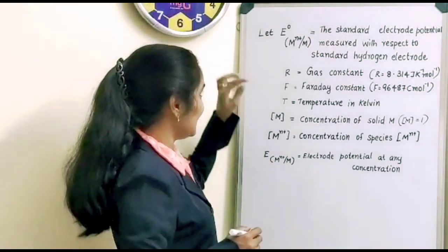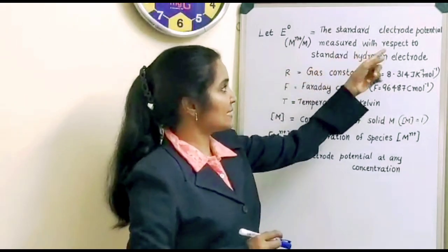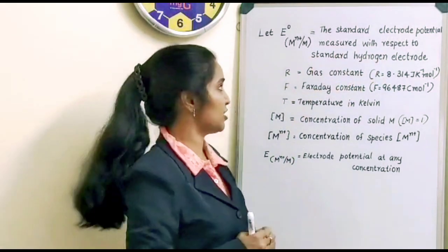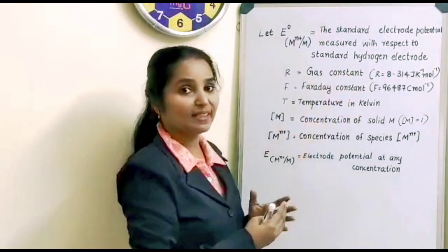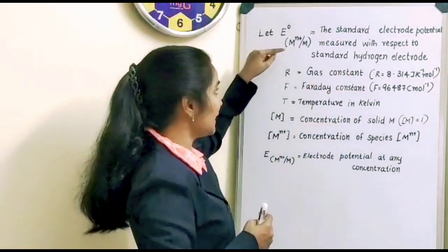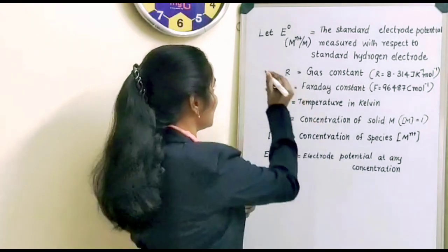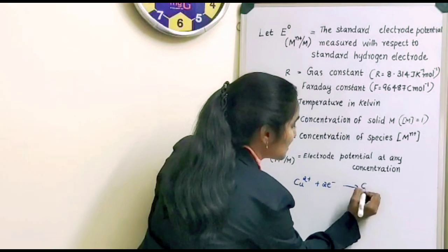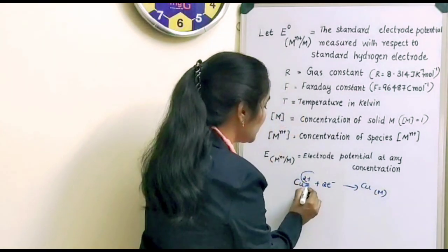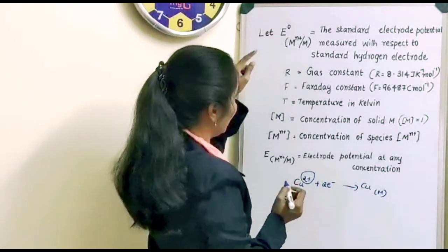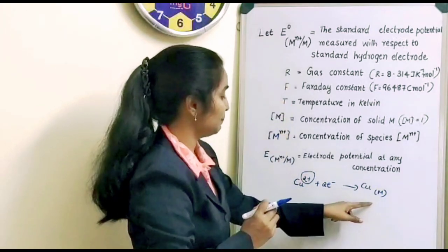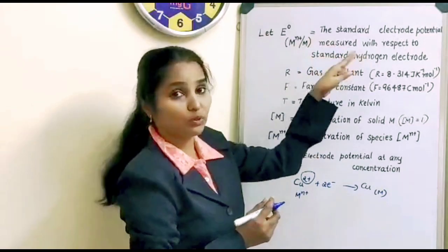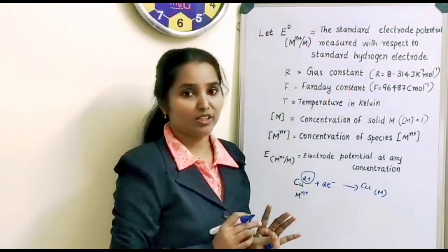See the terms used. Let E⁰(Mⁿ⁺/M) be the standard electrode potential measured with respect to the standard hydrogen electrode. For example, consider the reaction: Cu²⁺ + 2e⁻ → Cu. Here Cu is M, Cu²⁺ is Mⁿ⁺, and 2 is N. So we take E⁰(Mⁿ⁺/M) as the standard electrode potential measured with respect to the standard hydrogen electrode.